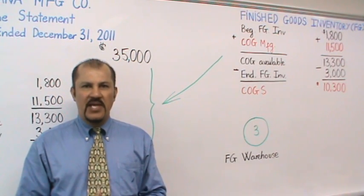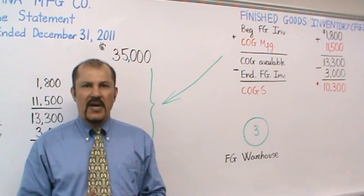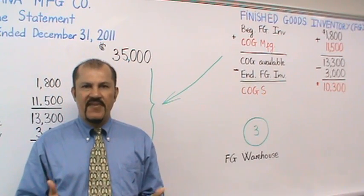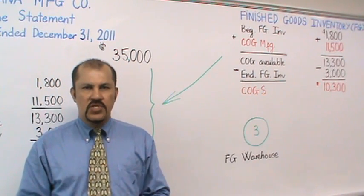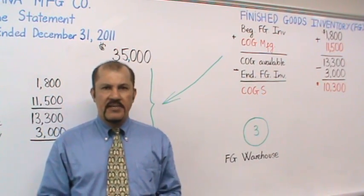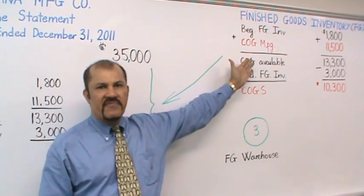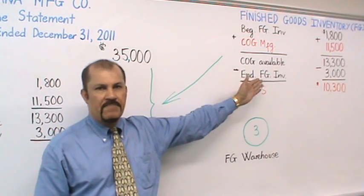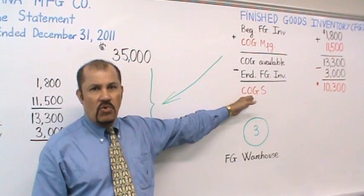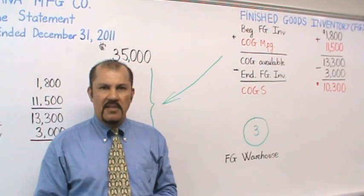Greetings, this is Professor Lazarus, and we will continue in part two of our discussions involving cost of goods manufactured and cost of goods sold. As you may recall, in part one, we had gone through a series of calculations that culminated in the cost of goods sold calculations of $10,300.